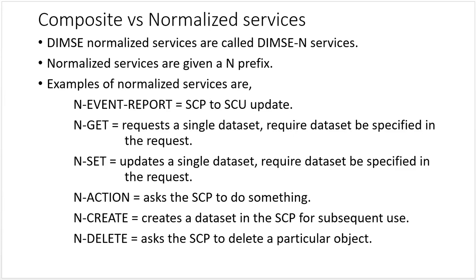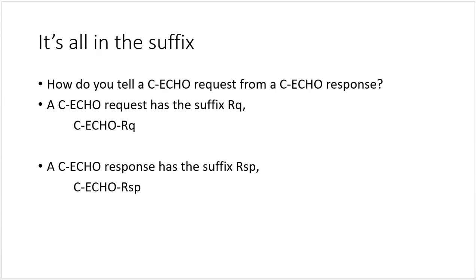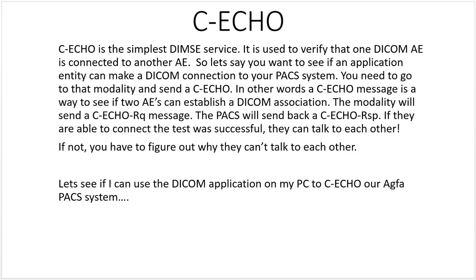Composite services are often made up of a group of normalized services. How do you tell a C-ECHO request from a C-ECHO response? A C-ECHO request has a suffix RQ — it would look like C-ECHO-RQ. A C-ECHO response has a suffix RSP — C-ECHO-RSP. That's a response message to a C-ECHO request.